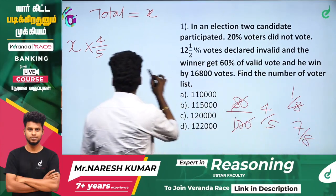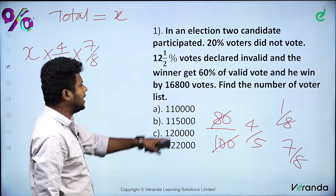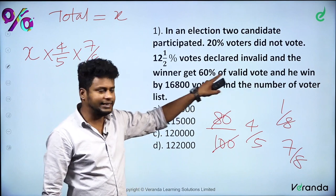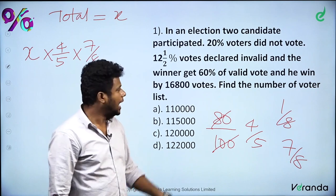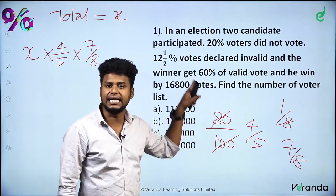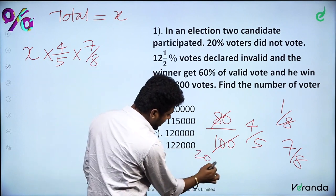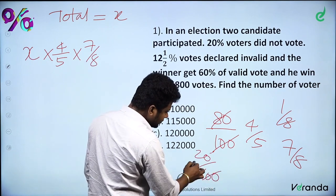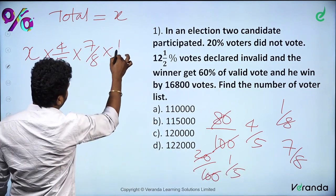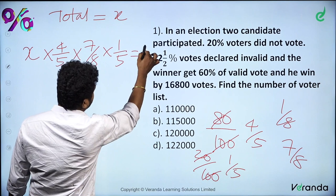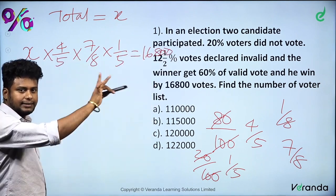So valid votes = x × 7/8 × 4/5. The winner gets 60%, the loser 40%, so the difference is 20%. This 20% equals 1/5 of valid votes. Setting that equal to 16,800: (1/5) of valid votes = 16,800.